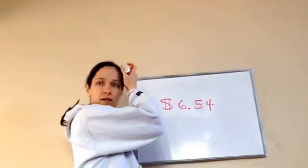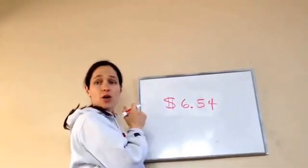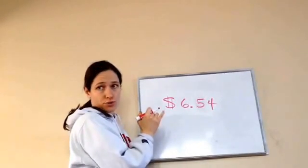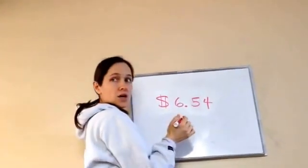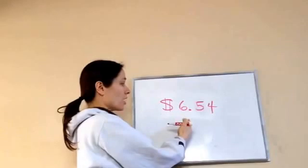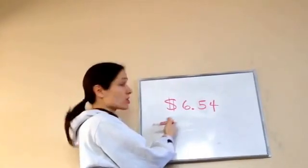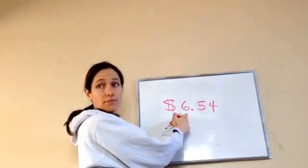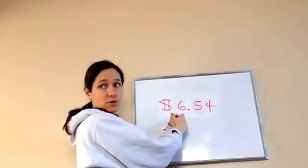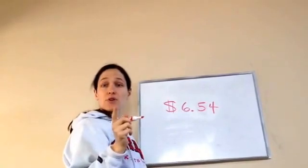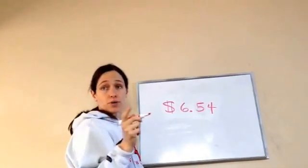$0.54. Let's talk about whole numbers real quick. Whole numbers come before the decimal, on the left of the decimal. So I have six whole dollars, don't I? So it's like whole numbers. Now, help me review the place value of whole numbers.